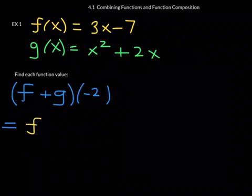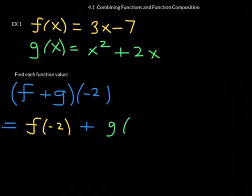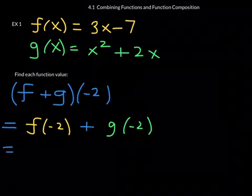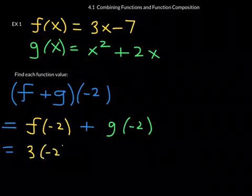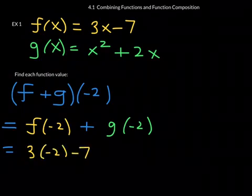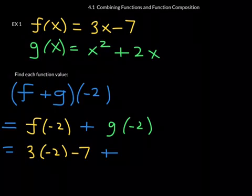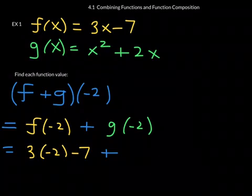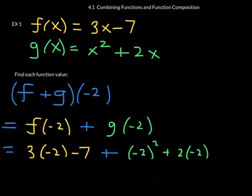So something like this: f at negative 2 plus g at negative 2. So notice with my notation, what I mean is we're going to plug negative 2 into f first. We're also going to plug negative 2 into g. And whatever we're getting as a result, we will add. So plugging negative 2 into f looks like this: 3 times negative 2 minus 7. Right there is my work for plugging negative 2 into function f. Don't forget we need to add that result to my result that I get when I plug negative 2 into function g. When I plug negative 2 into function g, it looks like this: negative 2 squared plus 2 times negative 2.